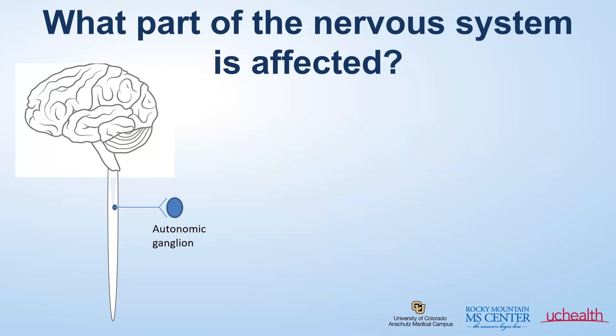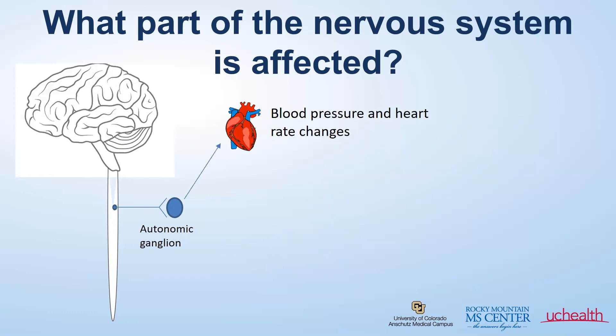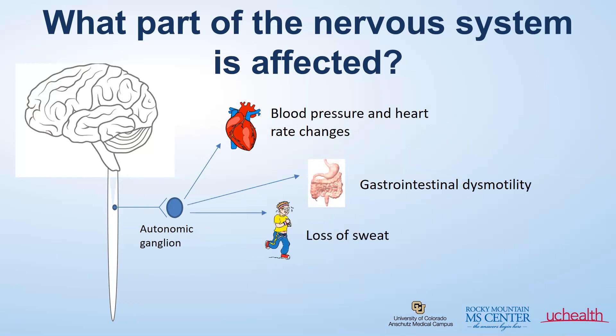Let's not forget about the autonomic nervous system. When the autonomic nervous system is involved, you can see problems with dysautonomia, including blood pressure changes, heart rate changes, gastrointestinal involvement, sometimes complete loss of sweating, as well as bladder and bowel dysfunction.